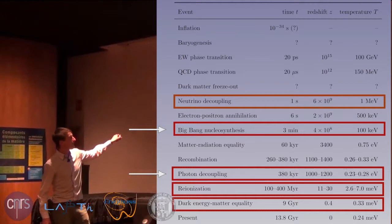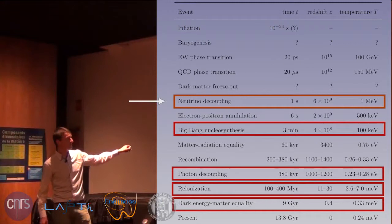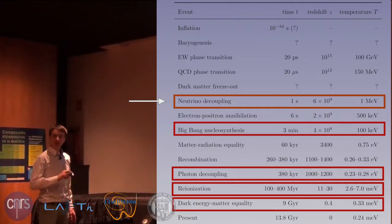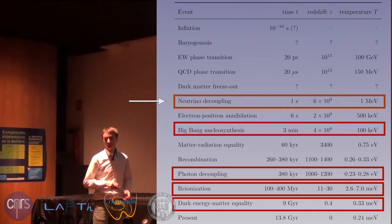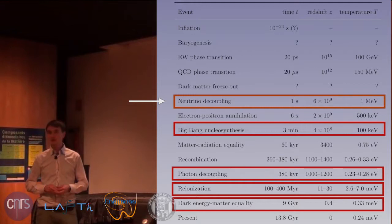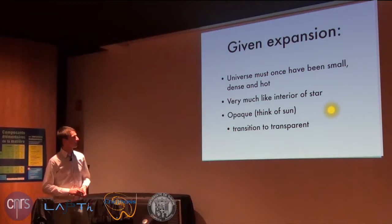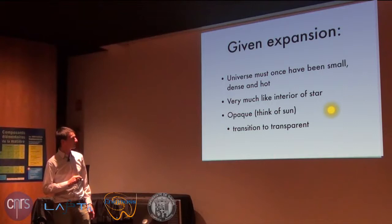I highlighted a few of these events — these are the moments to which we have observational access. I put neutrino decoupling in orange because we don't observe it exactly, but from the shape of the light we receive from photon decoupling we infer that there must have been the presence of certain particles that behave like neutrinos at the time of photon decoupling. The universe was dense and hot, very much like the interior of a star, so it was opaque.